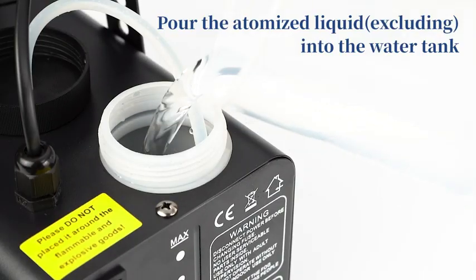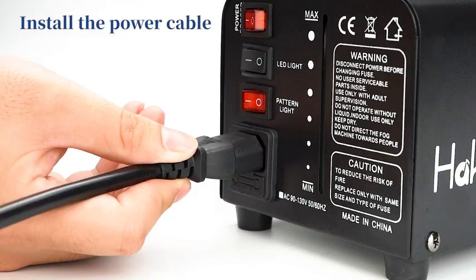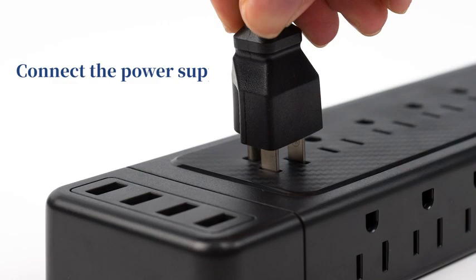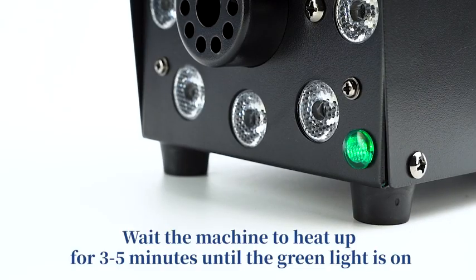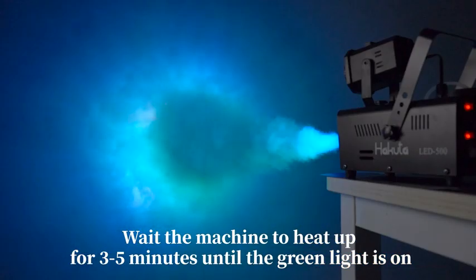Pour the atomized liquid into the water tank. Install the power cable, connect the power supply, turn on the machine. Wait for the machine to heat up for 3 to 5 minutes until the green light is on. Choose color.